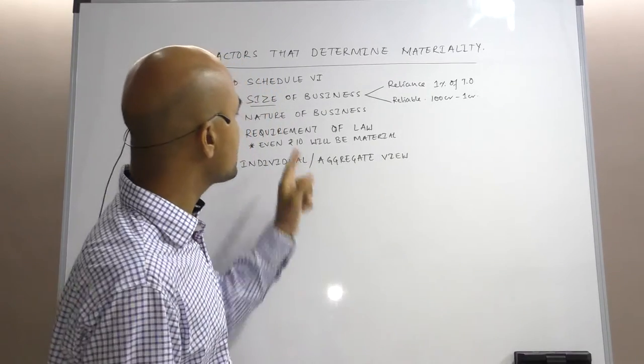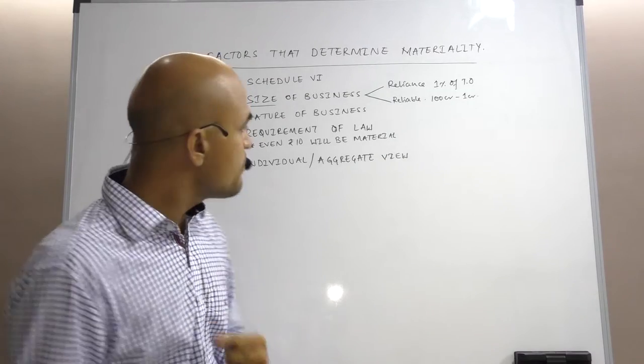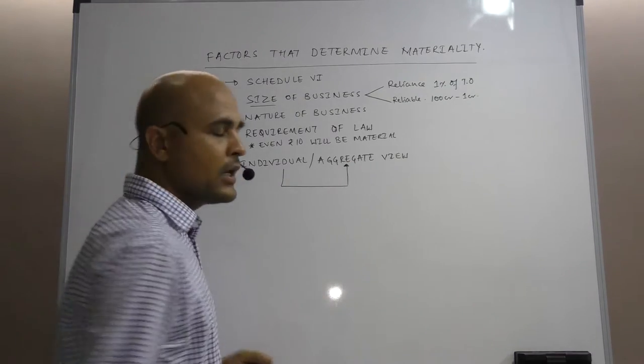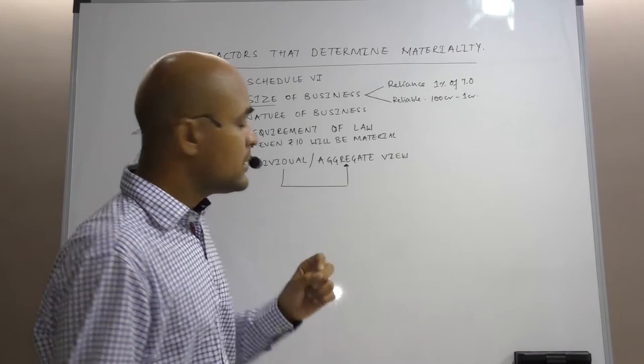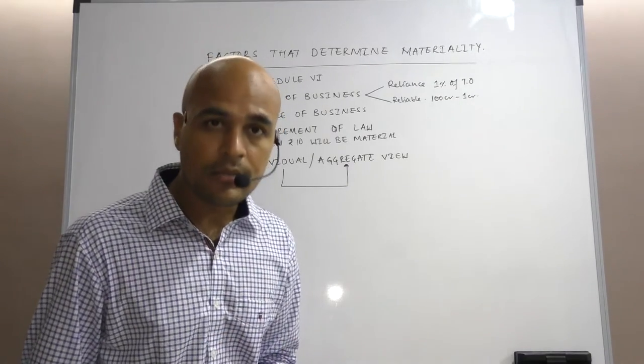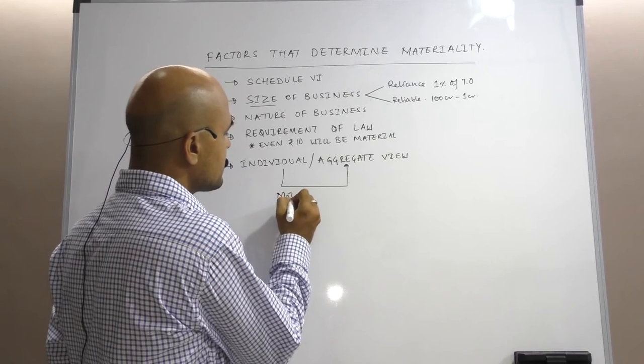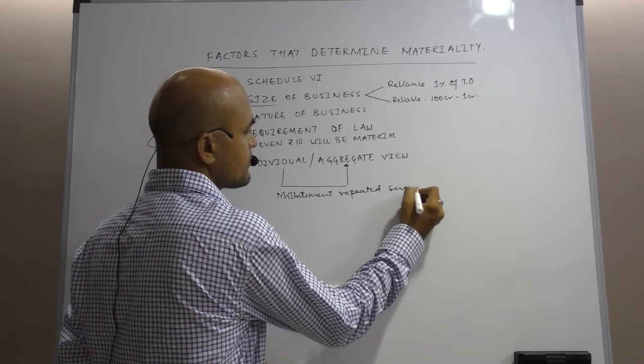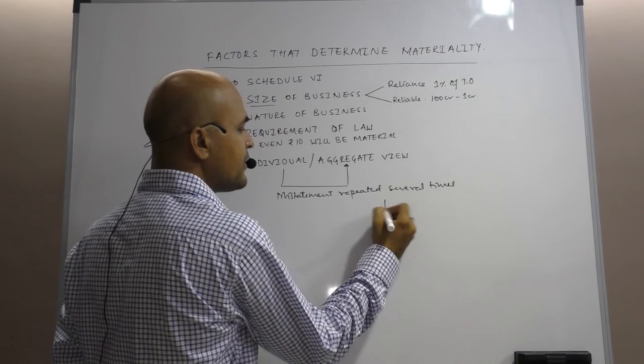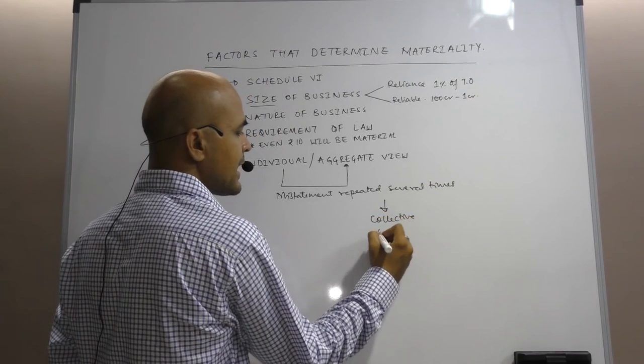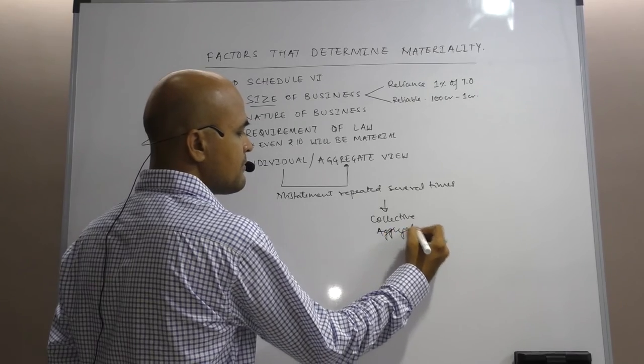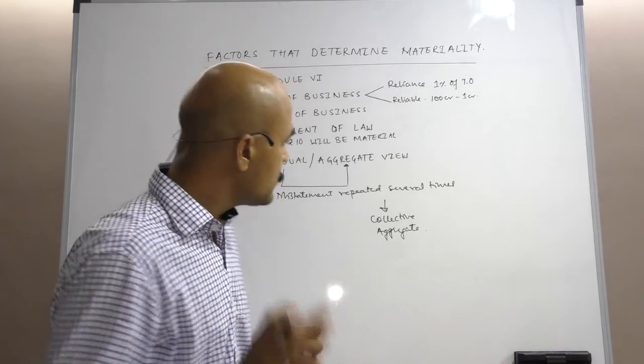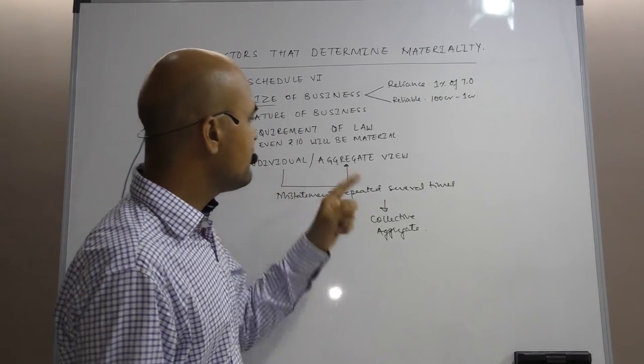More importantly, the auditor should consider both individual view as well as aggregate view. In many cases, an individual error or misstatement is not material, but such misstatement is repeated several times. The same misstatement is repeated several times, and when we take a collective view, which is nothing but aggregate view, the same misstatement becomes material. Therefore, as an auditor, I should consider materiality both at individual as well as aggregate level.